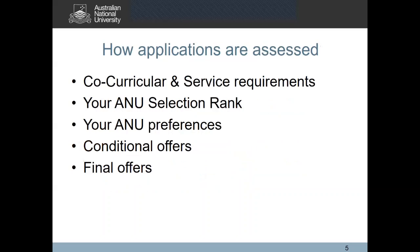Once you've submitted your application to ANU, we will assess your application in five stages. We will start by assessing your co-curricular and service requirements, then we will move on to develop your ANU selection rank. Based on that selection rank, we will assess your ANU preferences. Once we have assessed your preferences, conditional offers will be released to your highest eligible preference provided you are competitive for an offer.